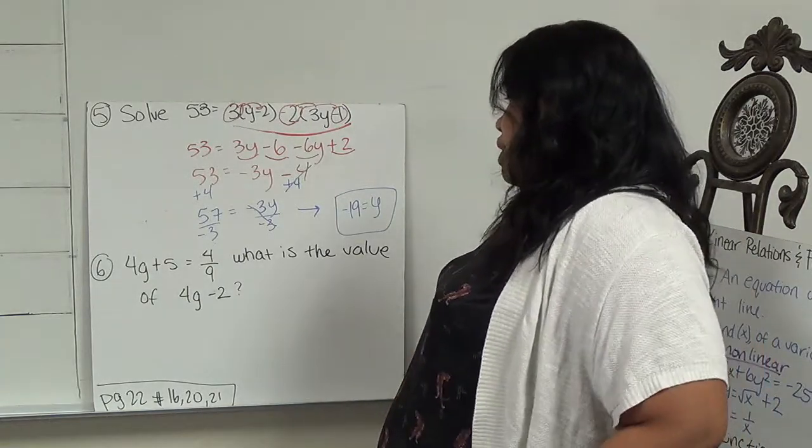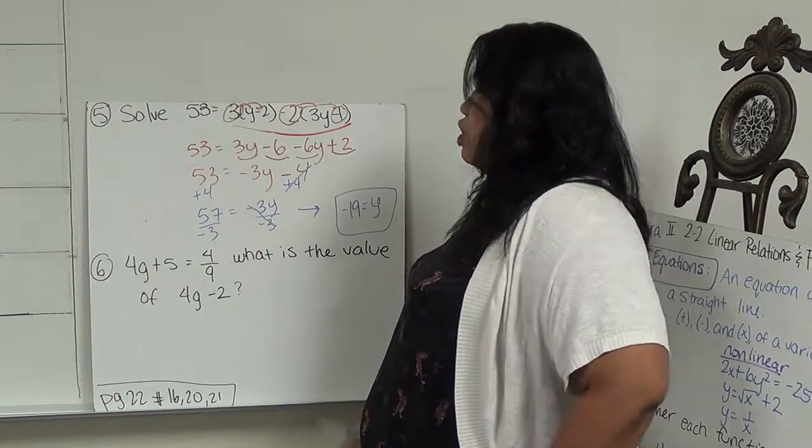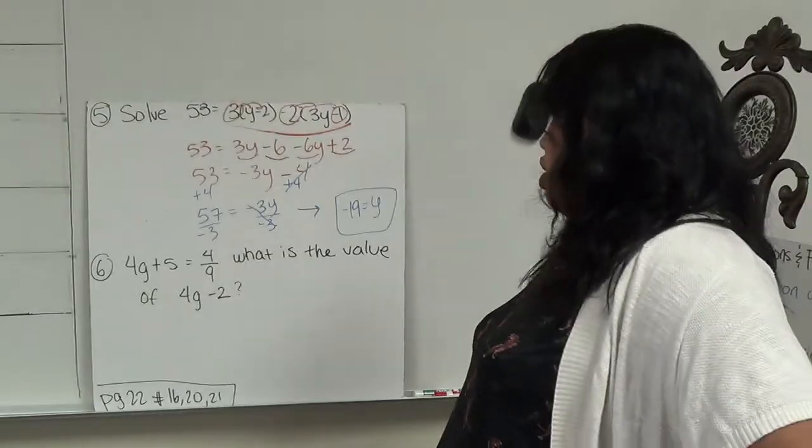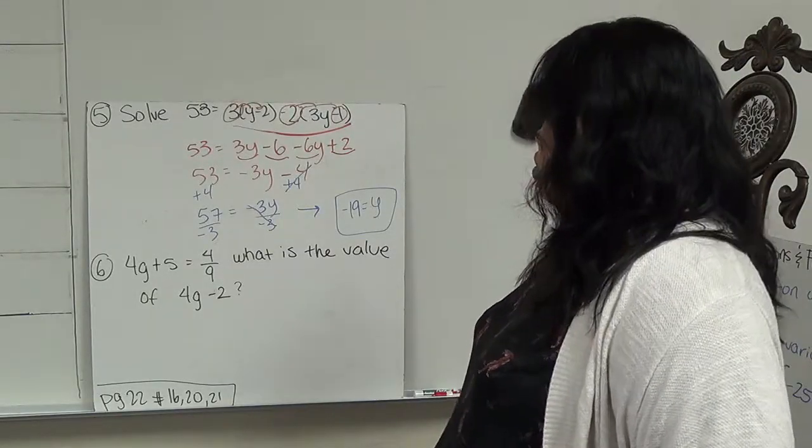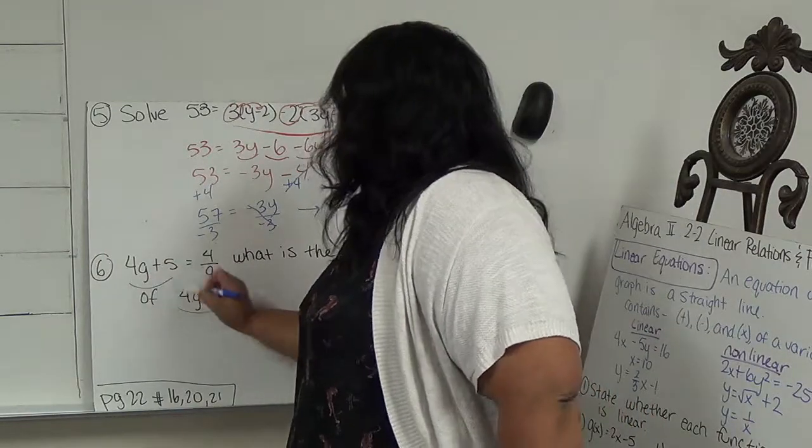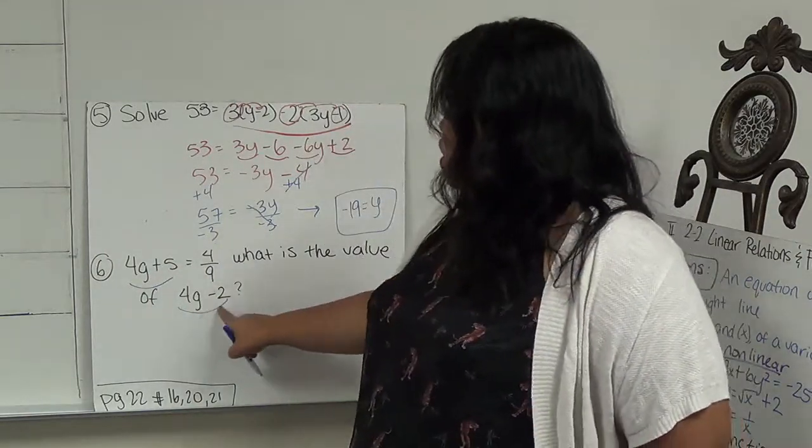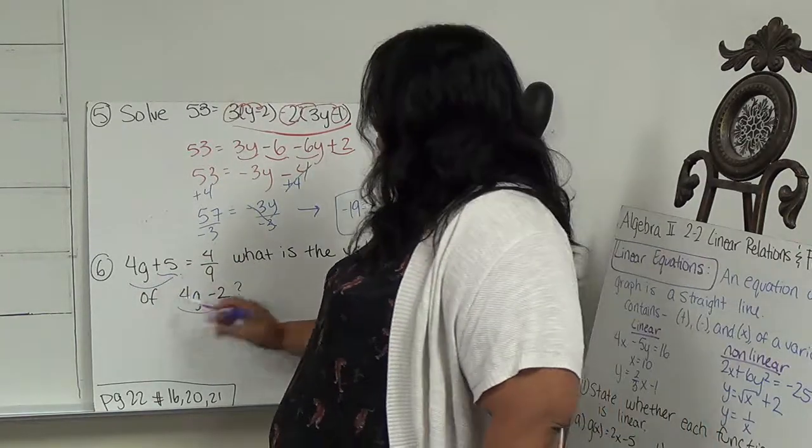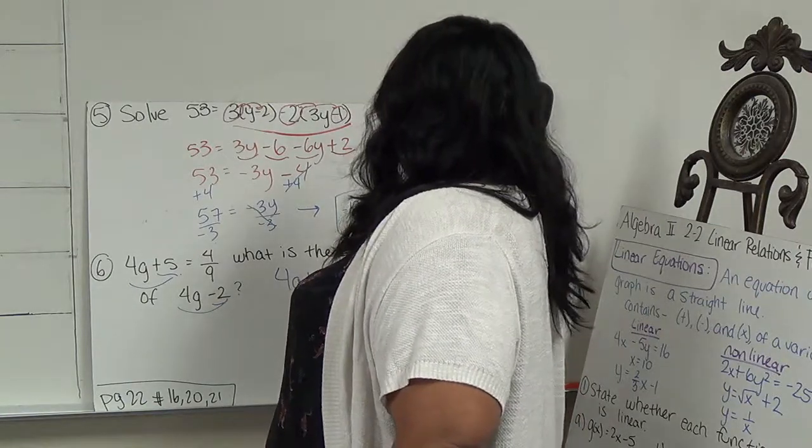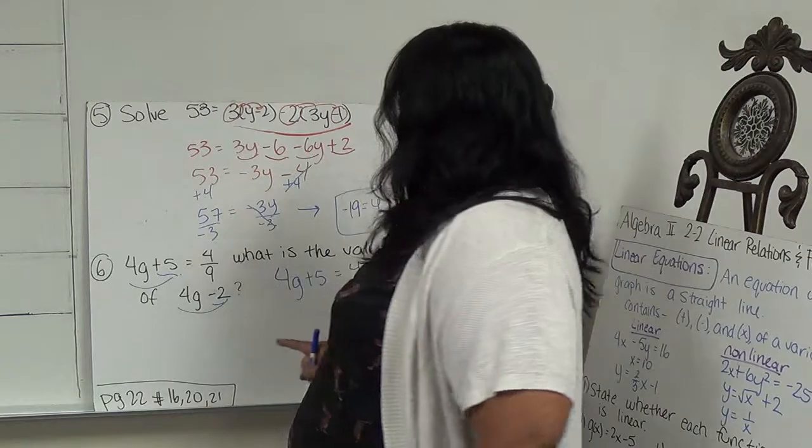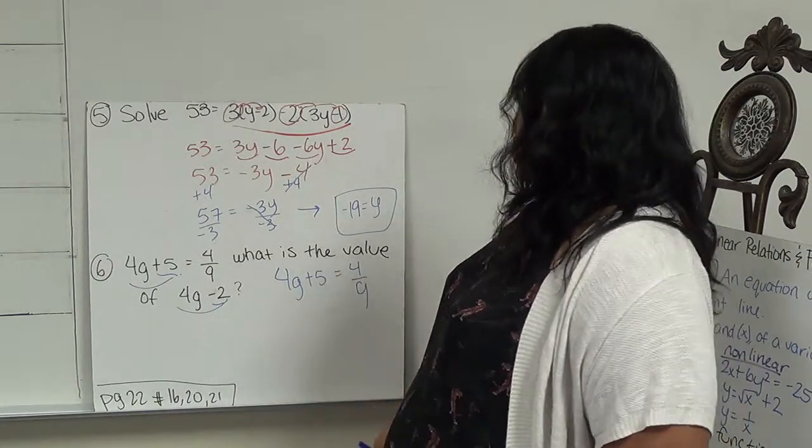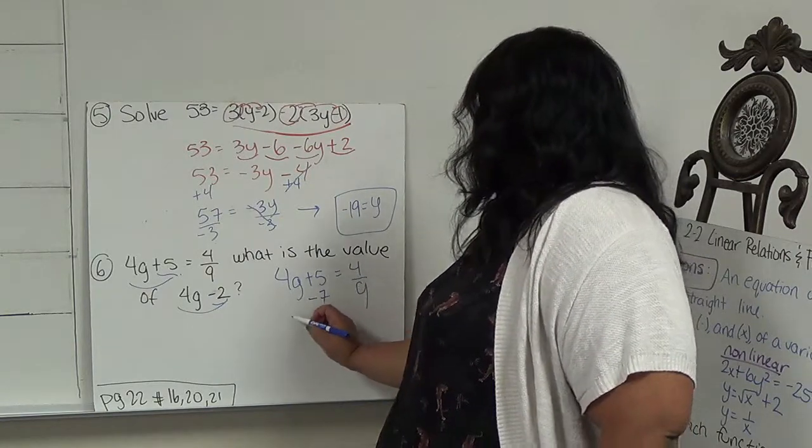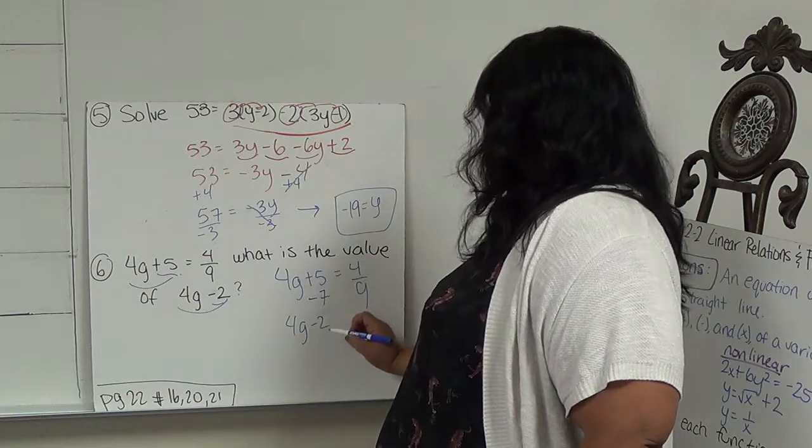Number 6 is a little bit tricky, because it's not asking you to solve, but it's a little bit of a riddle. So number 6 says, 4g plus 5 equals 4 over 9. What is the value of 4g minus 2? So let's focus on this. The difference between 4g minus 2 and 4g plus 5 is this term right here. In order for me to turn 4g plus 5 into negative 2, I have to subtract 7. If I subtract 7, I end up with 4g minus 2, which is exactly what I'm looking for.